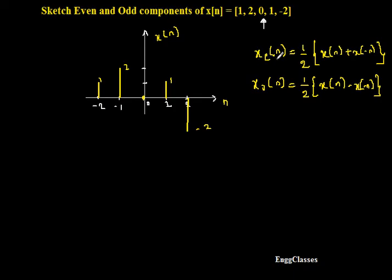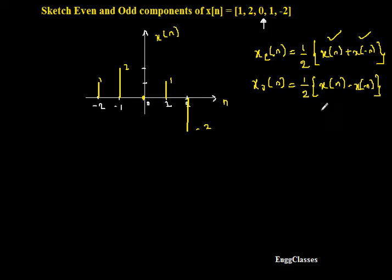Before sketching the even part, I need x(-n). x(-n) is the reflected version of x[n] along the vertical axis. If I sketch that, I can add those signals and divide by 2 to get the even part, or subtract them to get the odd part, then divide by 2.